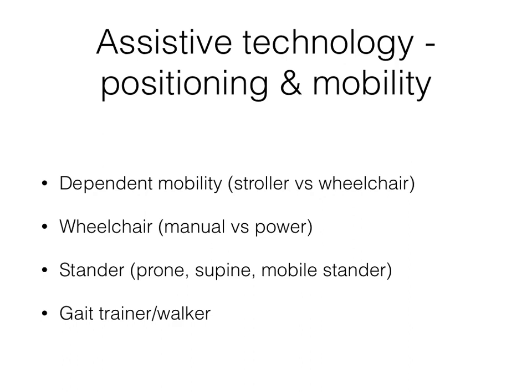Given the broad definition previously put forward, assistive technology is a very vast area. It can include communication devices, devices for activities of daily living, and all sorts of different devices that help children function in their daily lives. Because we're physical therapists, for this lecture we're going to hone in on assistive technology commonly used for positioning and mobility — covering dependent mobility devices, self-propelled manual and power wheelchairs, standers in prone, supine, or upright positions, and gait trainers and walkers.